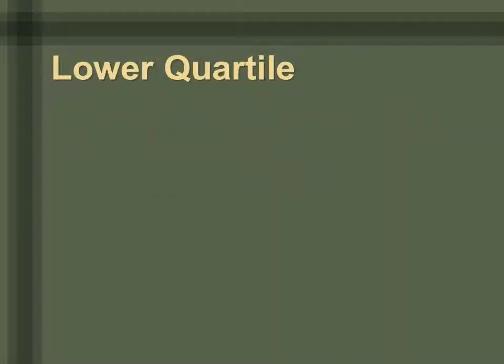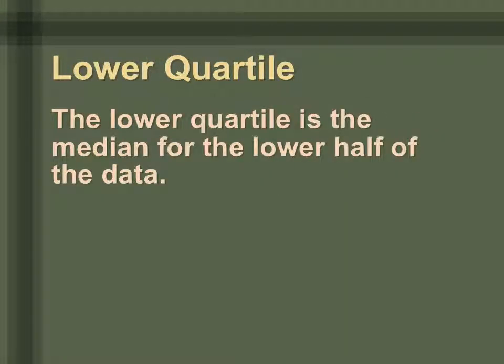You can find the lower quartile by finding the median for the lower half of the data. To do this, take your data, put it in order from least to greatest, and then split that data in half.